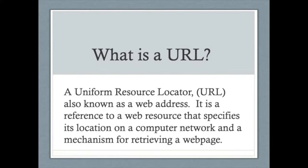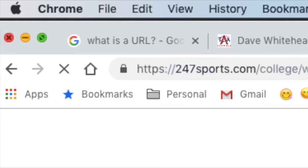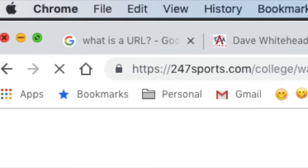So what is a URL? The easiest way to say it is it's the address bar up top. When you are typing in Chrome, Firefox, Safari, or whatever browser you're using, when you type in the address up top, that is what the URL is. It's just the address of the website you're going to. Here's an example of one.